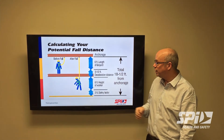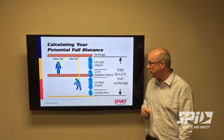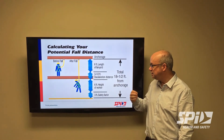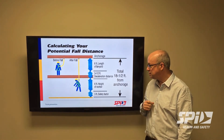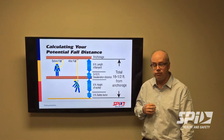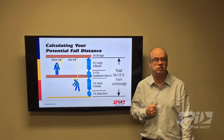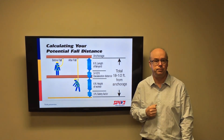So essentially the four elements are: the length of our connecting device, the deceleration distance, the height of the worker, and the safety factor.